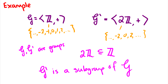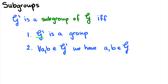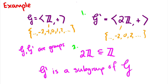That follows because: (1) g' is a group, and (2) the even integers are a subset of the integers. So again, it's a group and for every two elements in g' we have them in g. So that's one example of a subgroup.